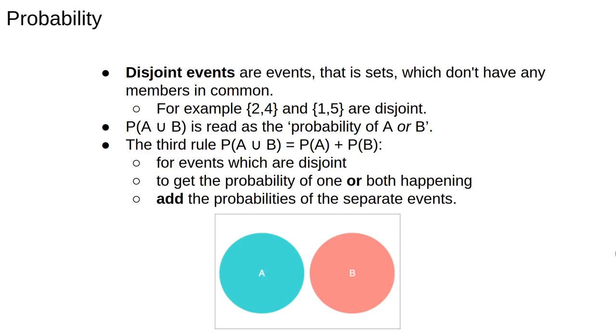Hopefully, this set diagram makes things clear. To interpret this, think of probability as equivalent to the area of the shapes, and the sample space S is the entire rectangle. To get the area of A or B, we simply add the areas of both circles.